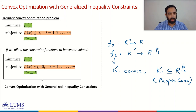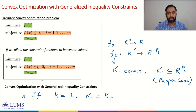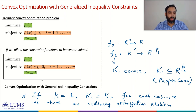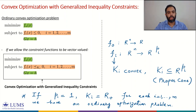It is easy to see that if each pi equals 1 and each Ki is R+ (the non-negative orthant), this convex optimization problem with generalized inequality constraints reduces to an ordinary convex optimization problem where the generalized inequality is replaced with the ordinary scalar inequality. So this formulation is a generalization of the ordinary convex optimization problem.